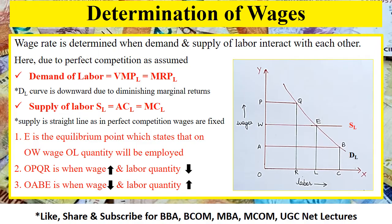The graph also shows that if the wage increases, the labor quantity will decrease, which is shown by OPQR in the graph. And if we decrease the wages, the labor quantity will increase, which is shown by OABC. Following this process, the wage rate can be easily determined.